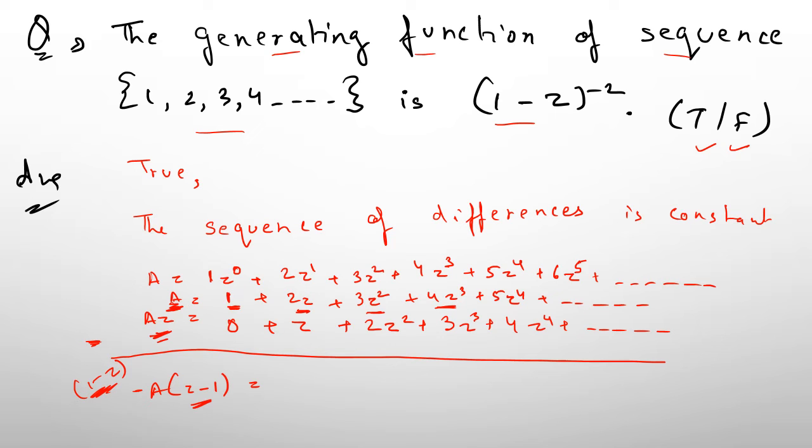We subtract the equations. Directly subtracting, we get 1 + z + z^2 + z^3 + z^4 and so on.